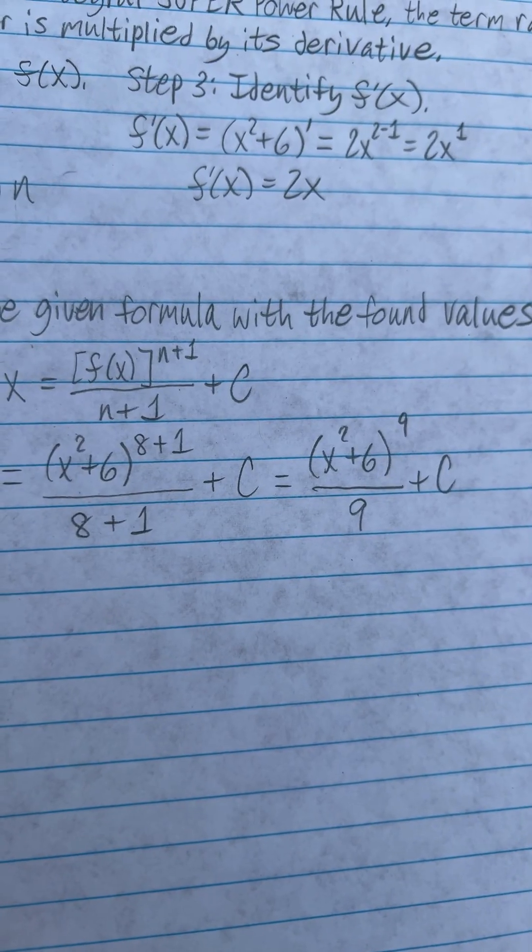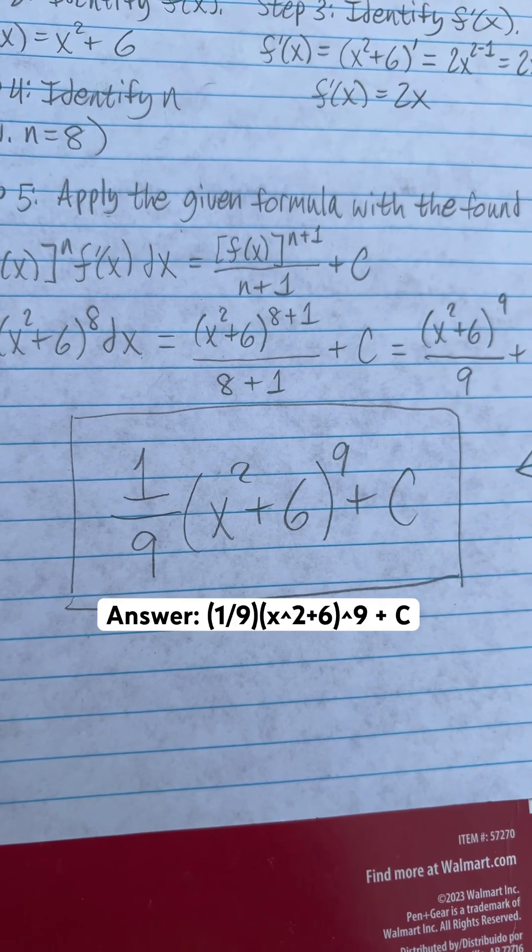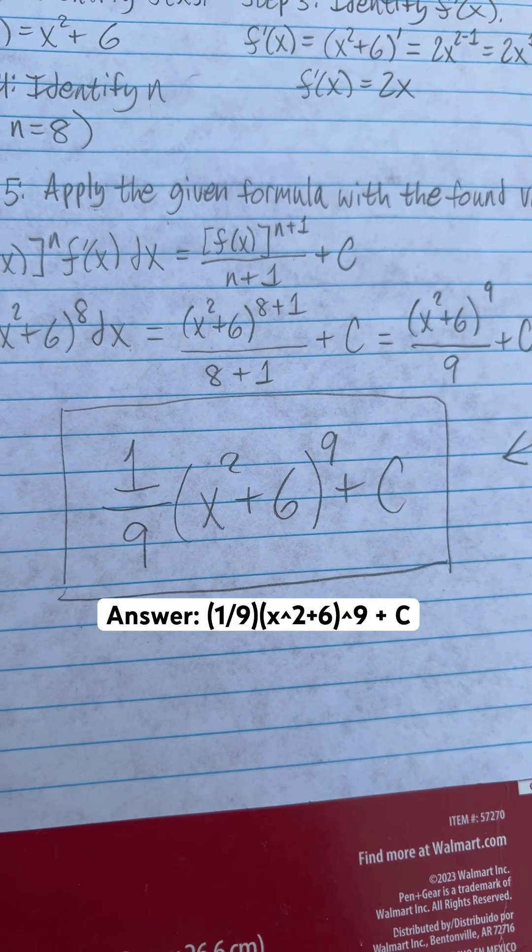Now simplify it to this, and your answer is 1/9 x squared plus 6 to the power of 9 plus arbitrary constant c.